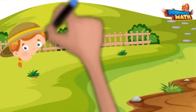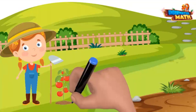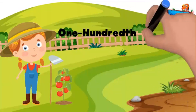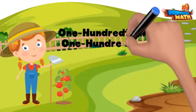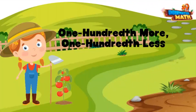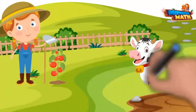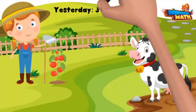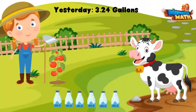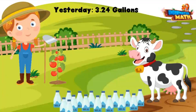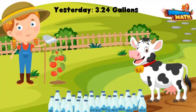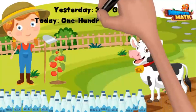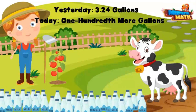Howdy friends, I'm Alice and today on the farm we have some work to do with hundredths more and hundredths less. This here is my cow Betsy. Yesterday she made 3.24 gallons of milk. Today she made one hundredth more gallons of milk — we need to determine how many gallons she made.